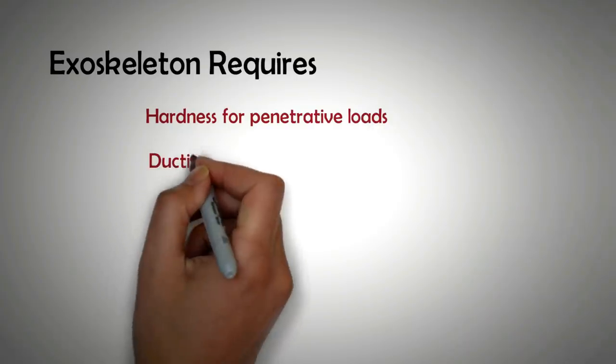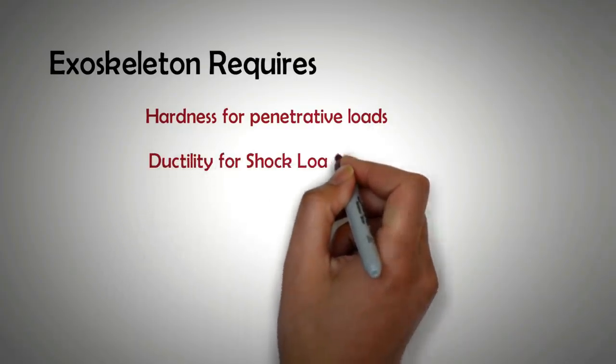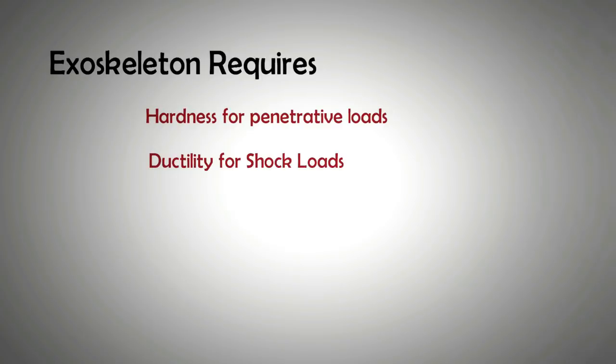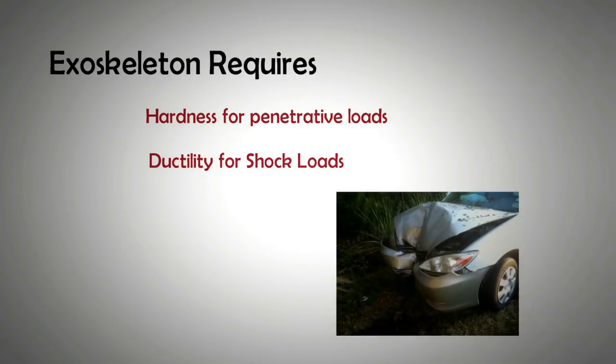However, one must also consider that if the material is too hard then any impact load would be passed on to the human body inside the suit. We have to remember that in automobiles, metal or composite body panels are deliberately made to crumple so to reduce the shock load that could be passed on to the human body inside the vehicle. But we cannot make an exoskeleton armor that would crumple, else its use would be just one off.